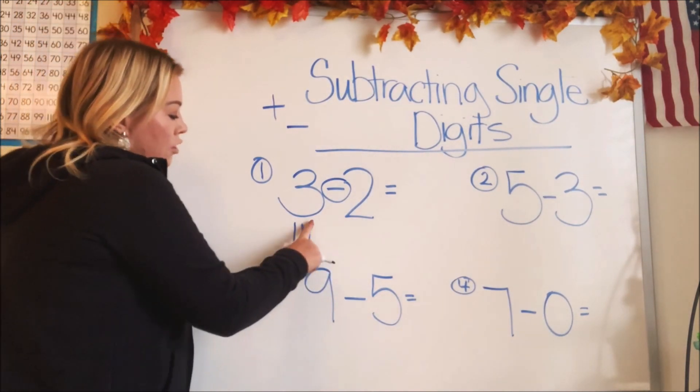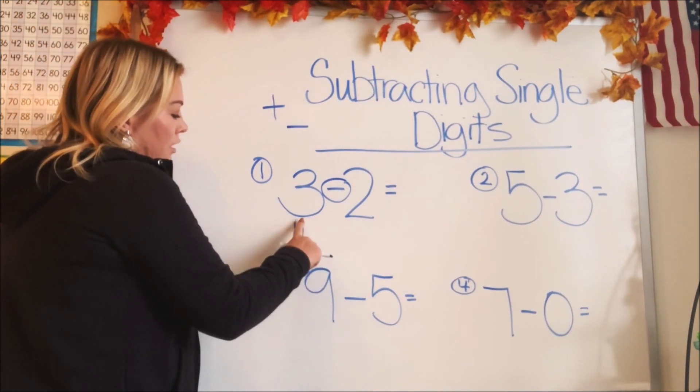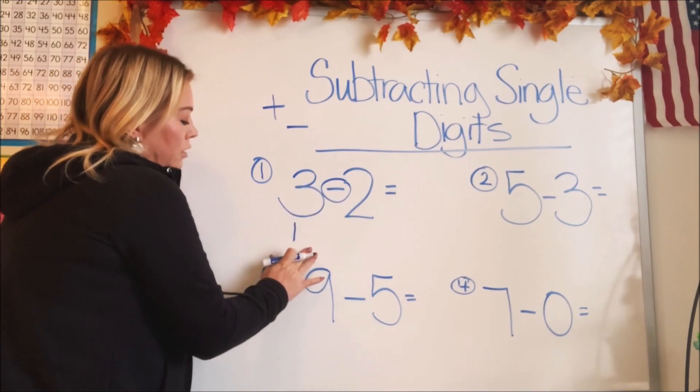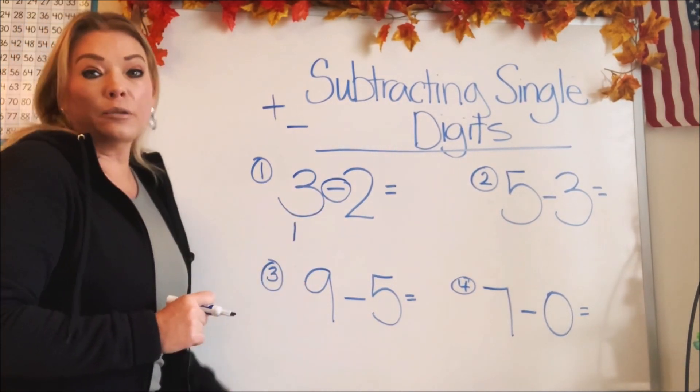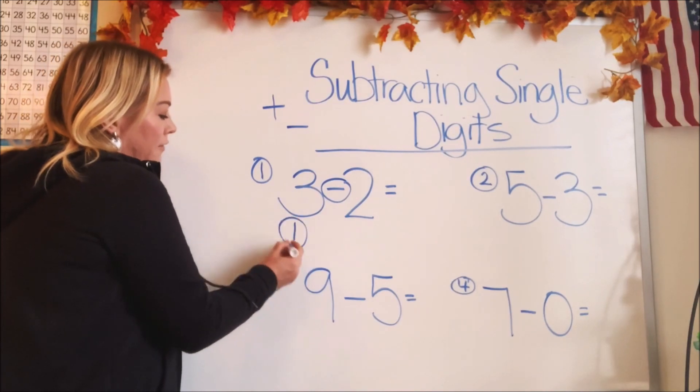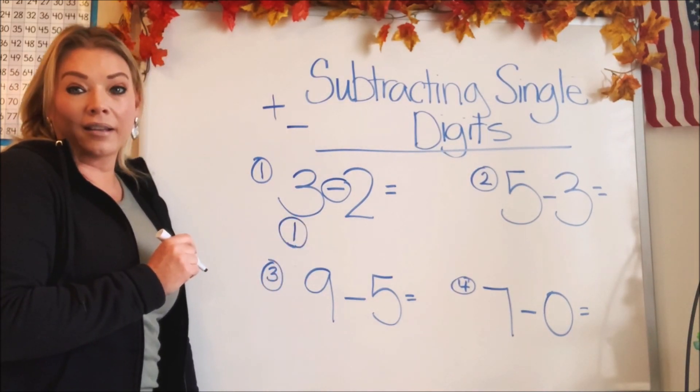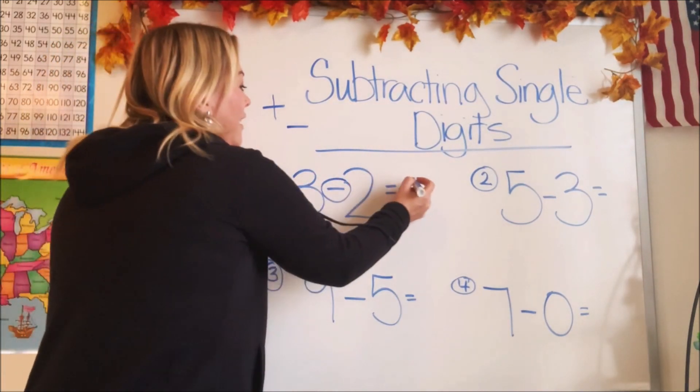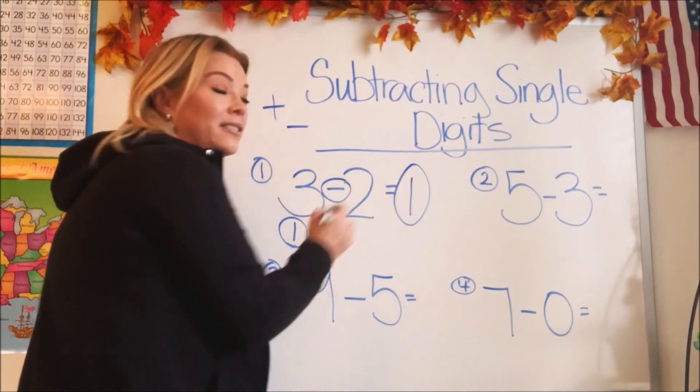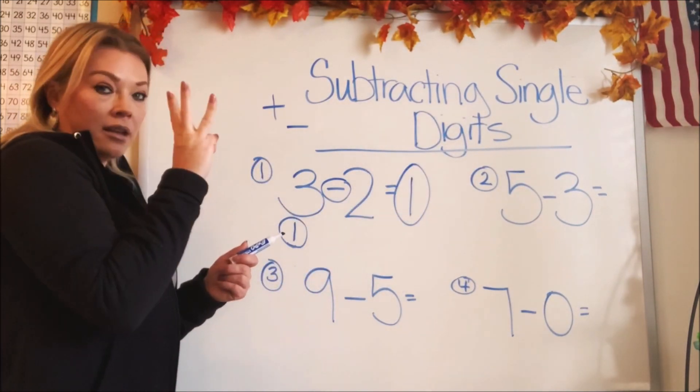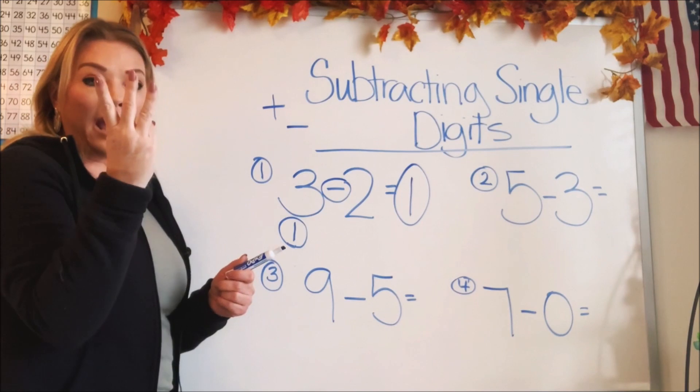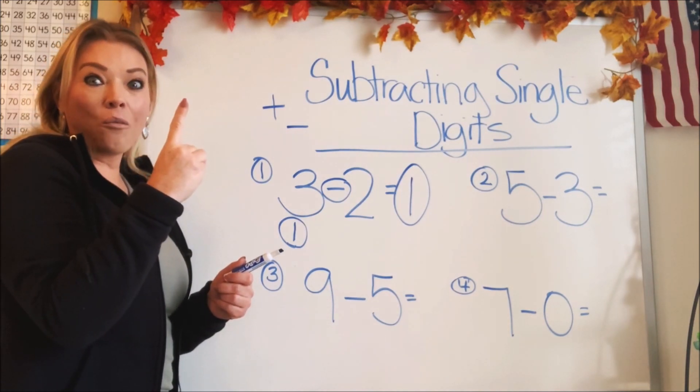So you can either erase two or you can just scribble them out. You can erase them with your eraser. I just erased it with my finger. And how many do we have left guys if we take two away? We have one. So that's our answer. So three, and if you take two away, you have one, don't you?